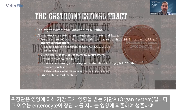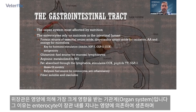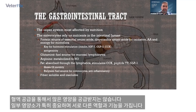The gastrointestinal tract is the organ system that is most affected by nutrition, and the reason for that is that the enterocytes rely on food passing through the GI lumen for their sustenance, and they don't receive a lot of nutrition otherwise from their blood supply.